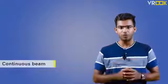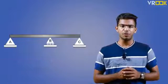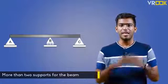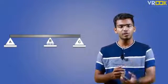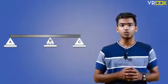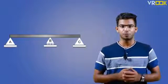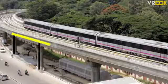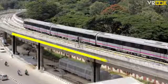Then the next type is continuous beam. In continuous beam we have more than two supports for the beam. It can be any type of support: simple, roller, hinge, or fixed. So if it's more than two supports, then it is a continuous beam. For example, the metro elevated tracks where the beam is supported by many supports.